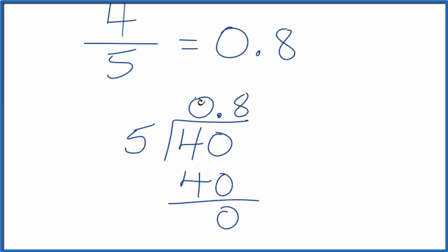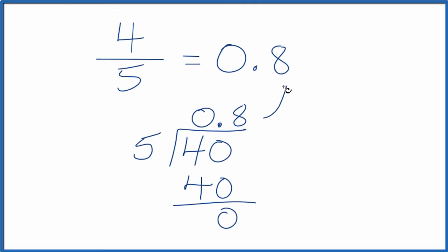So four-fifths as a decimal equals 0.8, which is what we just found. You could take this 0.8 here and multiply that times five, and you would get four. So that's another way to check your answer.